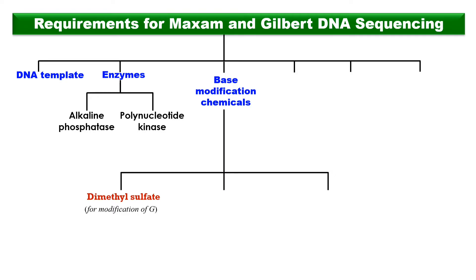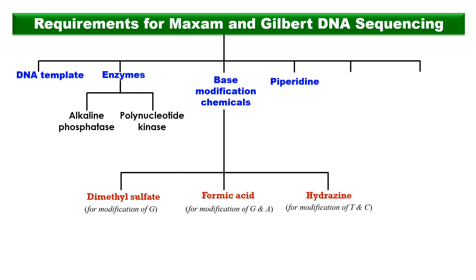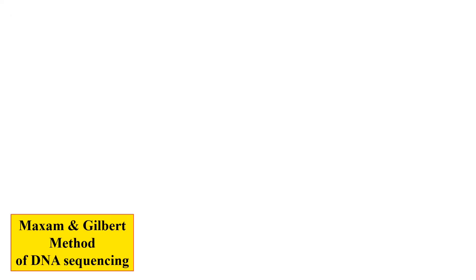The base modification chemicals include: dimethyl sulfate, which adds a methyl group to guanine for its modification; formic acid, required for the modification of guanine and adenine; hydrazine, for the modification of thymine and cytosine. We also require piperidine, which is required for the cleavage of the modified base. Additionally, P-32, a radioisotope of phosphorus, is required for labeling the DNA fragment, along with facilities for agarose gel electrophoresis and autoradiography for fragment detection.